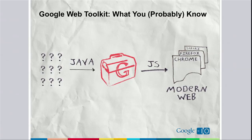The GWT compiler takes your Java source code and cross-compiles it into highly optimized JavaScript that downloads quickly and runs quickly in all the popular web browsers that your users are likely to use.